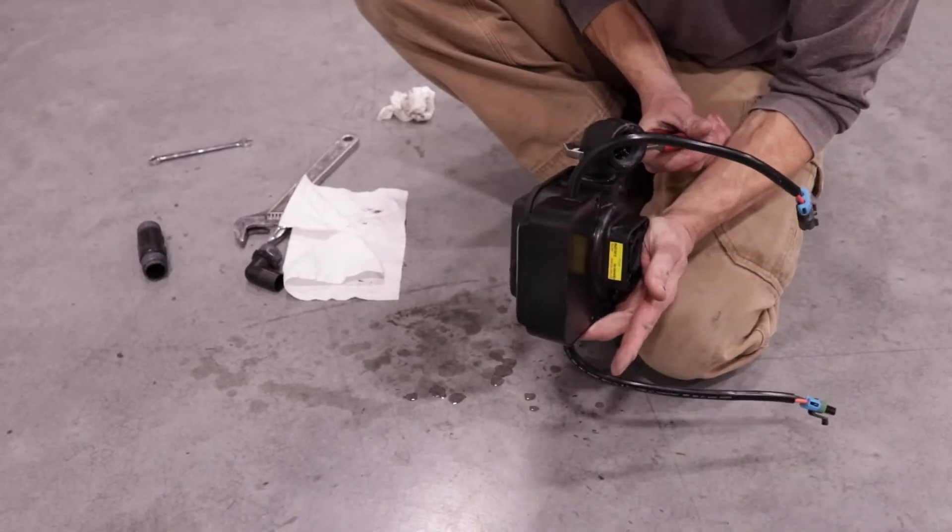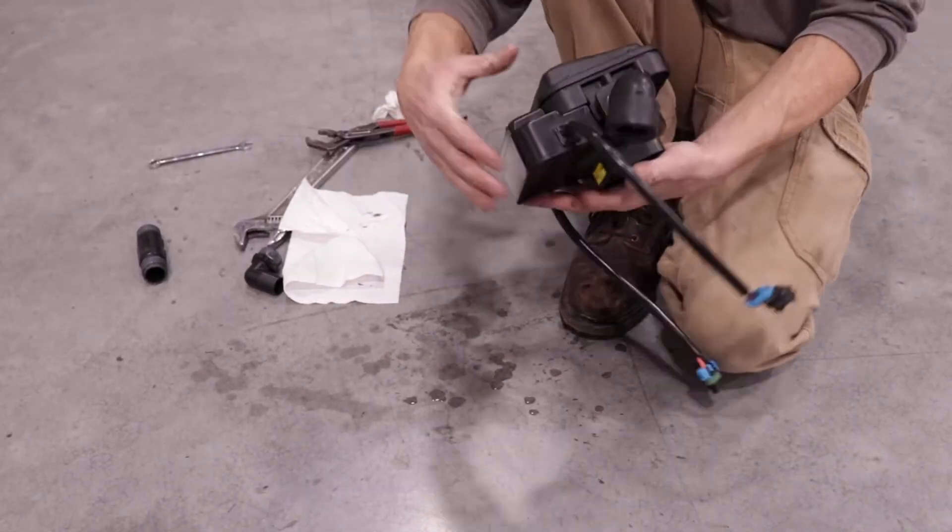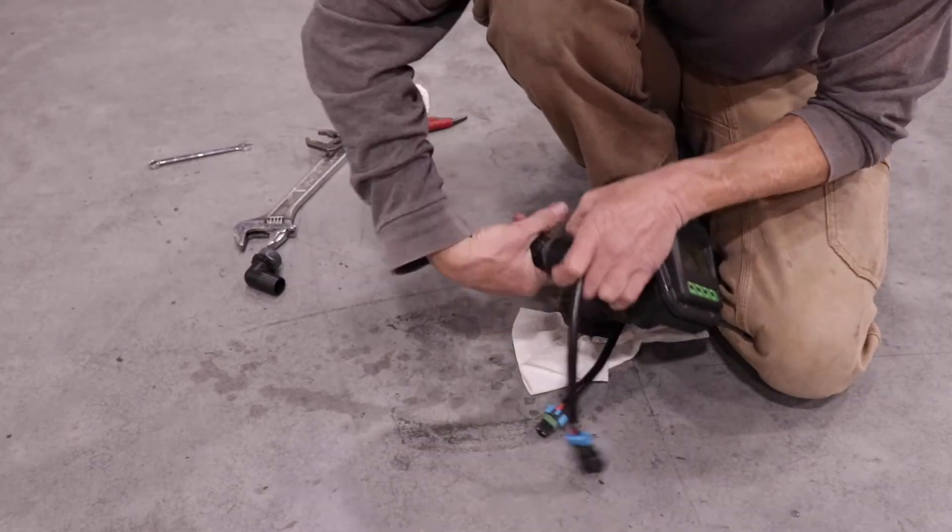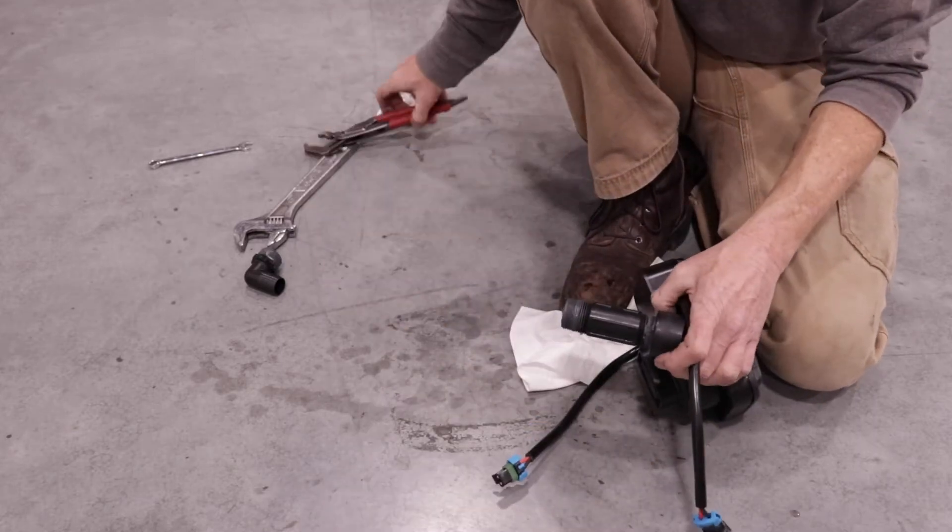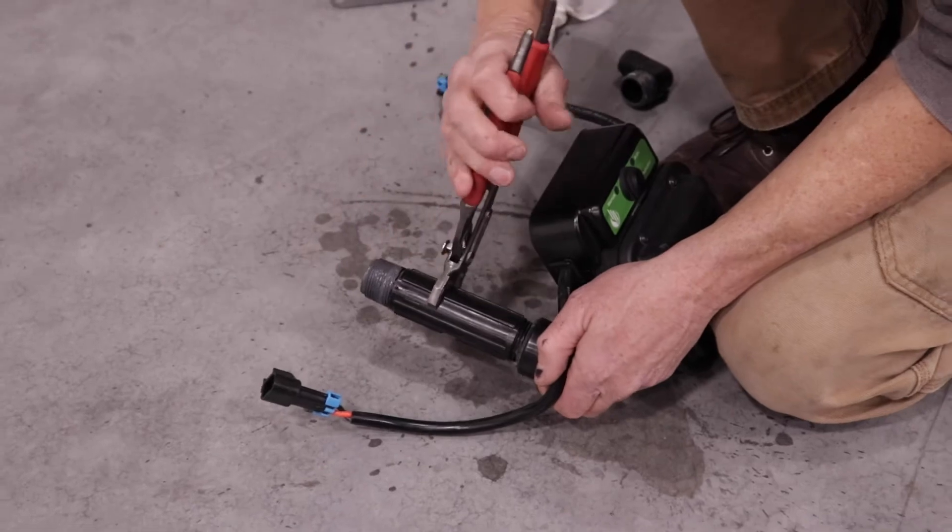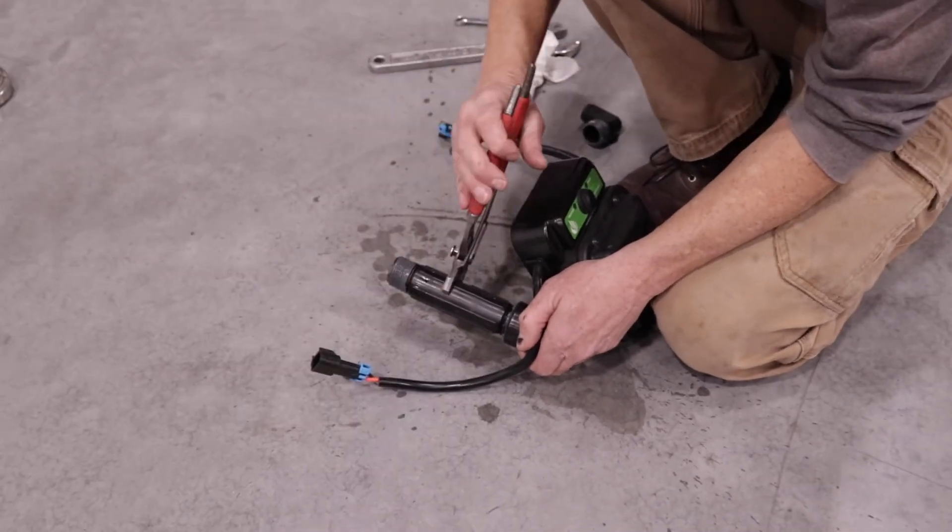For meters to be installed in position number one or number two on dashboard, thread a four-inch nipple into street elbow. For meters to be installed in position number three or number four on dashboard, thread a six-inch nipple into street elbow.